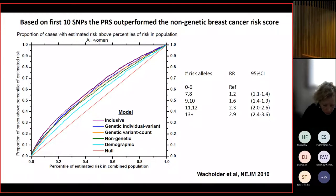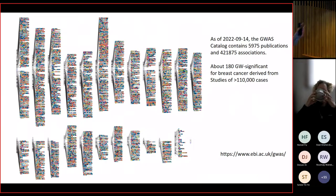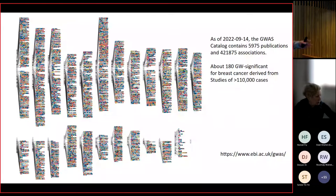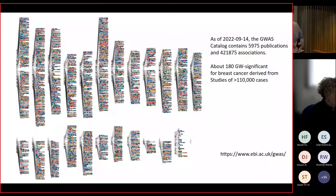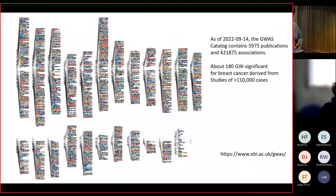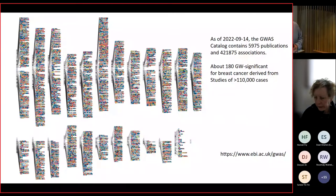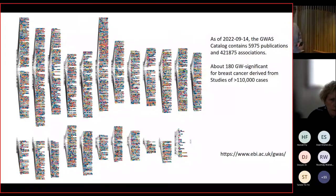That was basically the first two years of polygenic risk score development in around 2010. The field exploded. From EMBL data, across more than 200 conditions and phenotypes, there are almost 6,000 publications and over 400,000 individual associations in those publications. There's almost no part of the genome that doesn't have some relationship—again, with very, very low relative risks—with one of these many diseases or phenotypes.